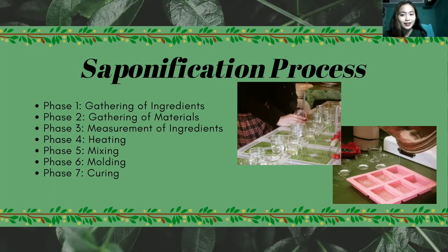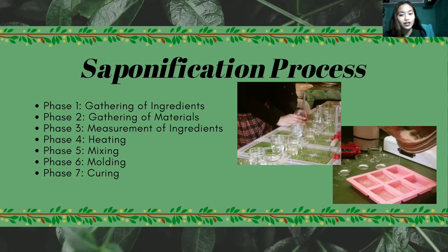Likewise, phases 6 and 7 are also interconnected. Phase 6 is the molding process, where the liquid mixture formed from the heating and mixing processes is poured into soap molds. And lastly, phase 7 is the curing process, where the liquid mixture slowly solidifies to become a soap on the soap molds. The pictures shown at the side are from our group making the soaps. The one above is from phase 3, the measurement of the ingredients, and the one below is from phase 6, the molding process.